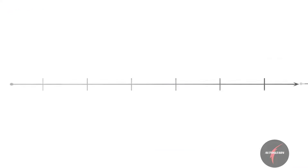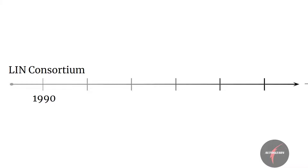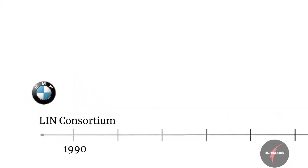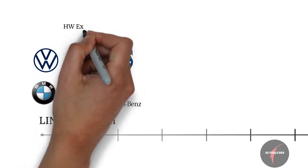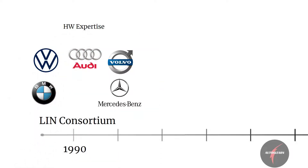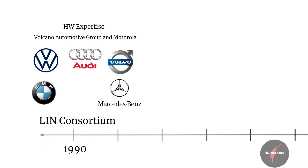So in the late 1990s, the LIN consortium was founded by five auto manufacturers: BMW, Volkswagen, Audi, Volvo, and Mercedes-Benz, with networking and hardware expertise supplied by Volcano Automotive Group and Motorola.